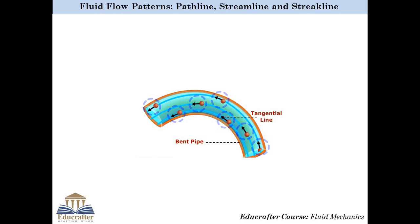It is easily observed that the blue lines are tangential to the local velocity vectors of the fluid particles, and hence these blue lines are known as streamlines. This is a case of steady flow and hence the streamline will remain the same at every instant of time.